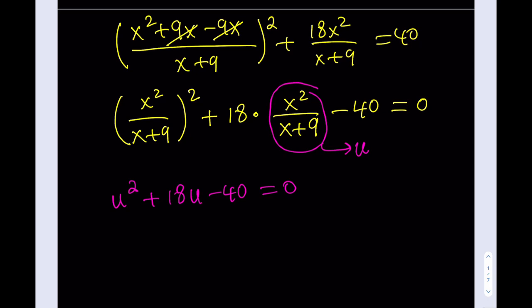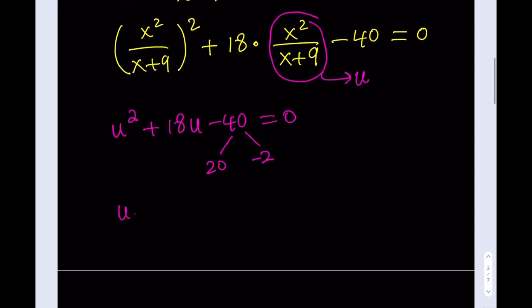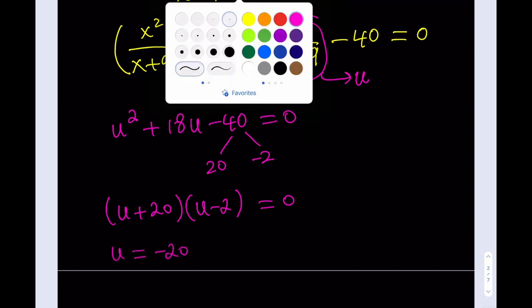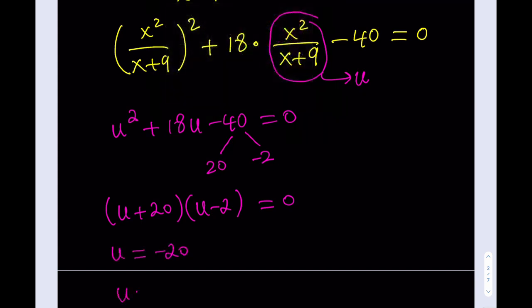And I think this is factorable. I was thinking about 8 and 5, but that doesn't work. How about 20 and 2? But one of them has to be negative. Here we go. Sum and product satisfied. So this gives me u plus 20 multiplied by u minus 2 being equal to 0. And as a result, I get u equals negative 20 and u equals 2.